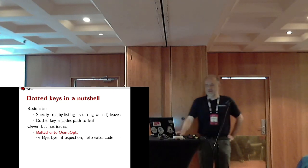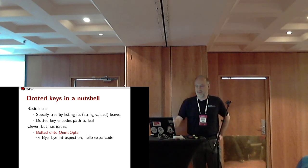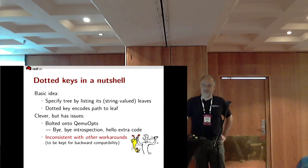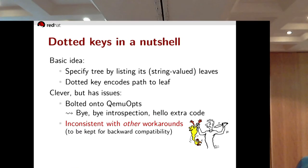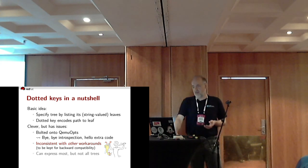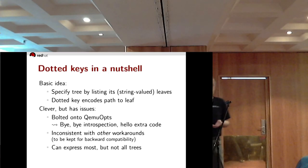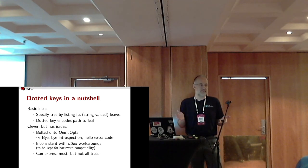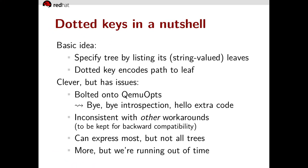This is clever but there are issues. First, it is bolted on to QEMUopts, so again bye-bye introspection — hello extra code. Next, it's inconsistent with other workarounds elsewhere which we can't get rid of because of backward compatibility. And it can express most but not all trees — consider the empty list: there are no string-valued leaves there. There's more, but we are running out of time.